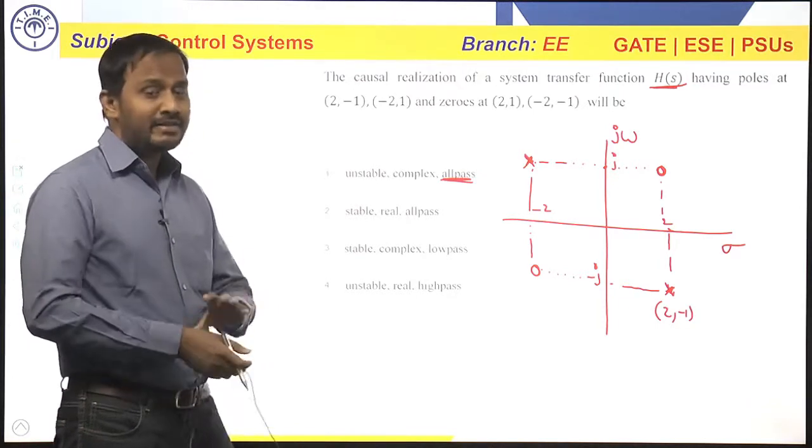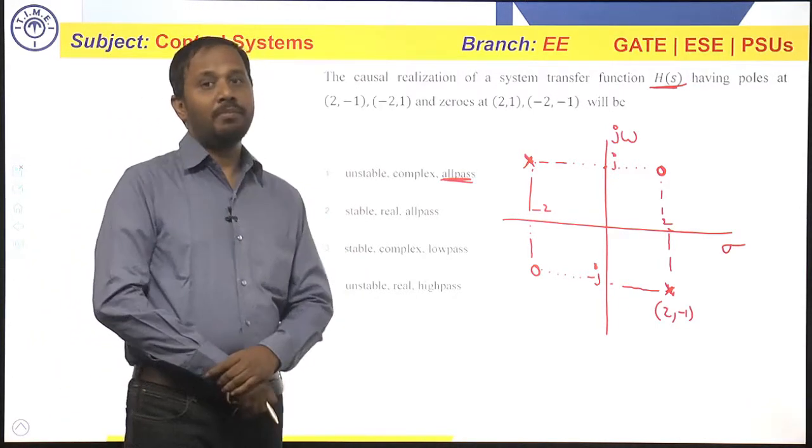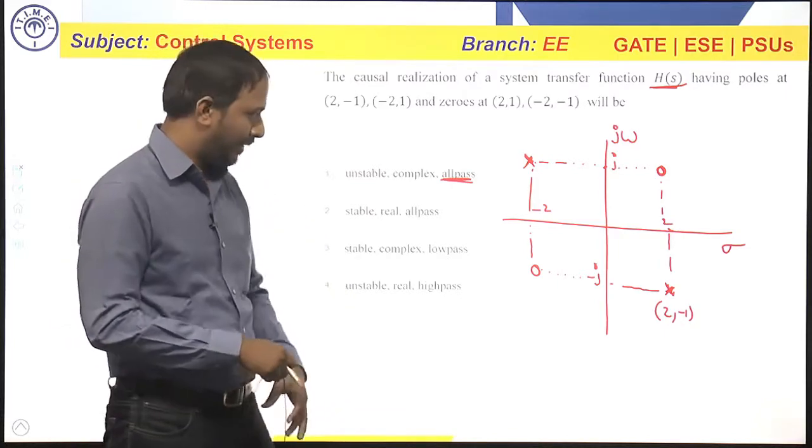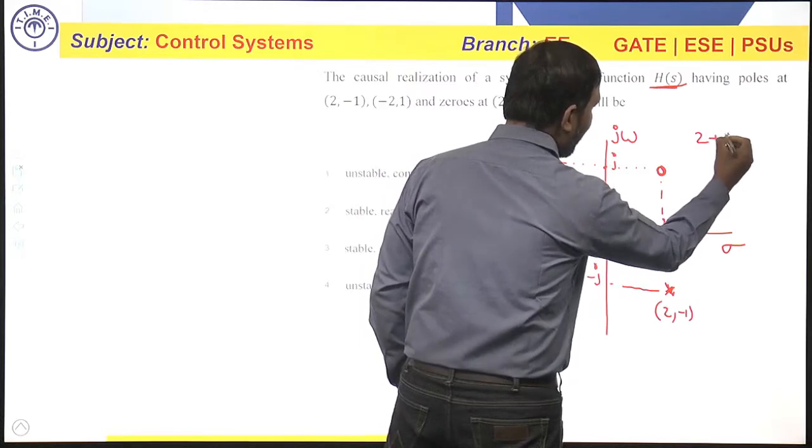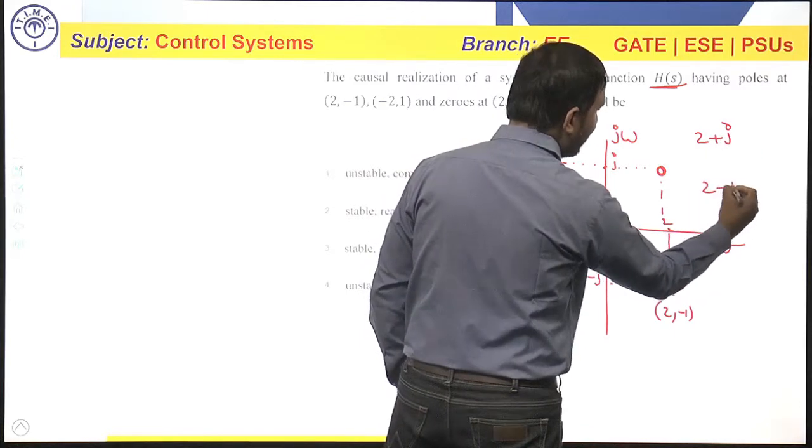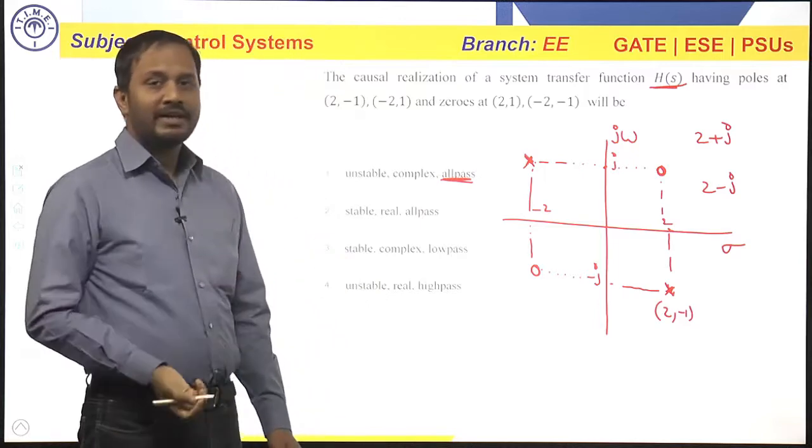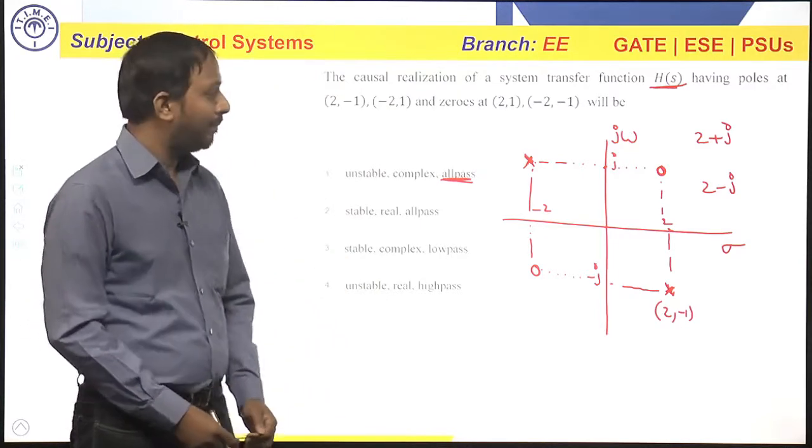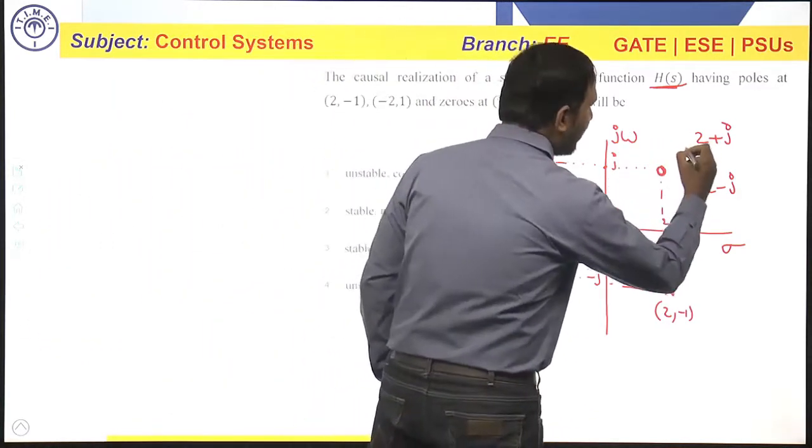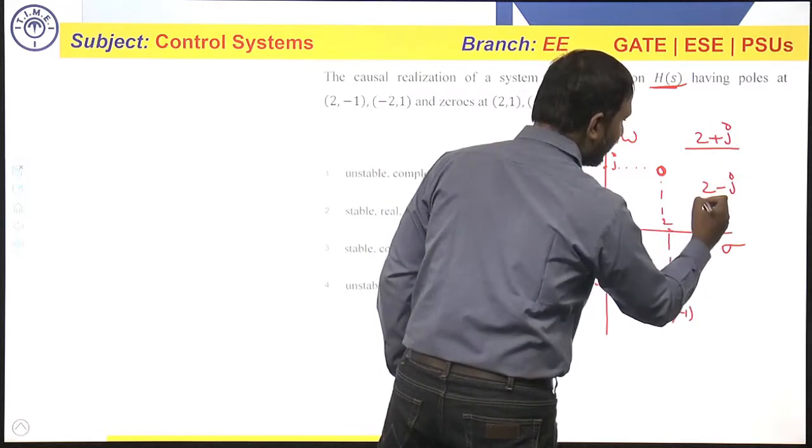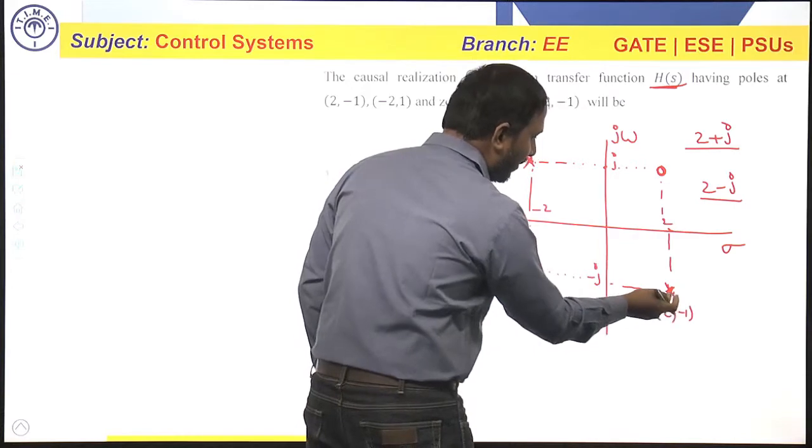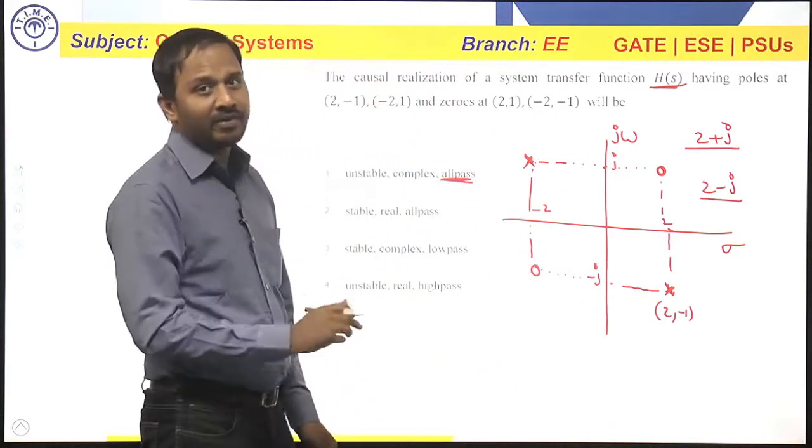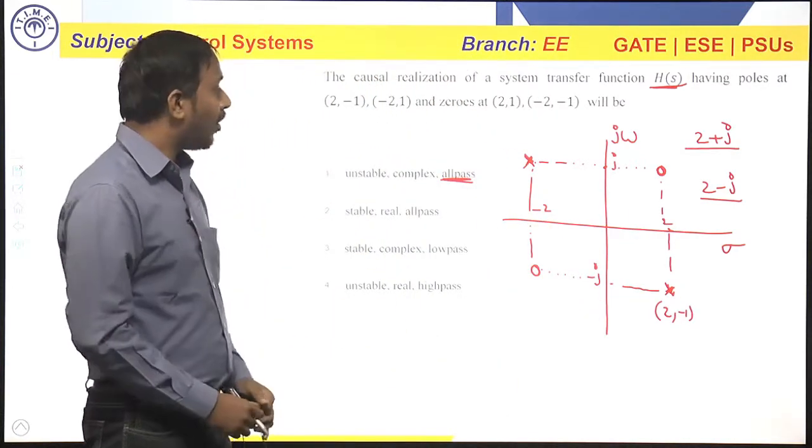And we know that for a real system, poles and zeros form complex conjugate pairs. Means, if I have zero at 2 plus j, the other zero must be at 2 minus j. For a real system, poles and zeros form complex conjugate pairs. So, zero at 2 plus j means the other zero must be at 2 minus j, which is not so here. At 2 minus j, we have a pole. So, this is not a real system. So, this is a complex system.